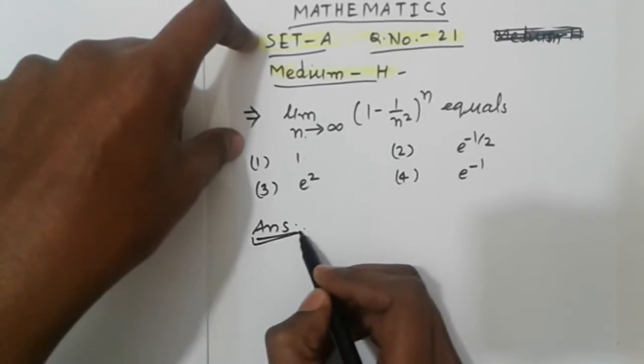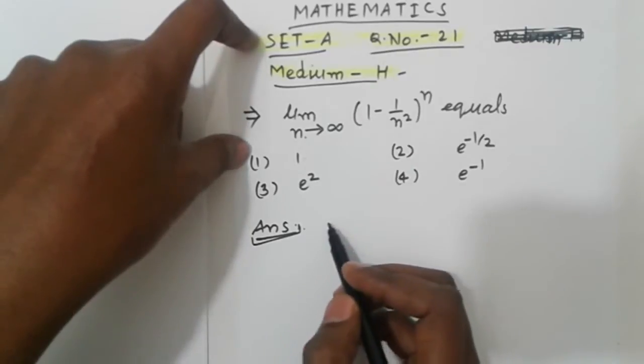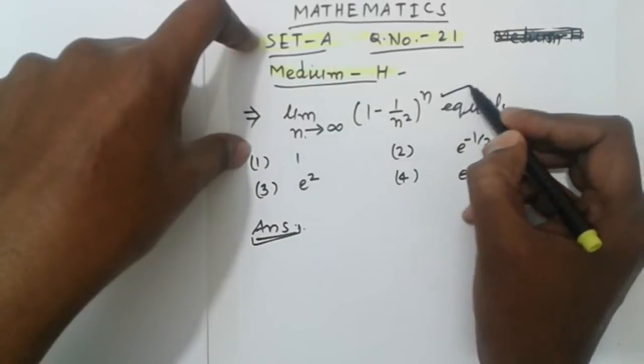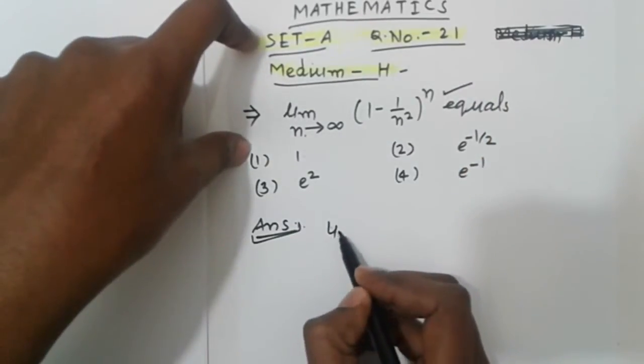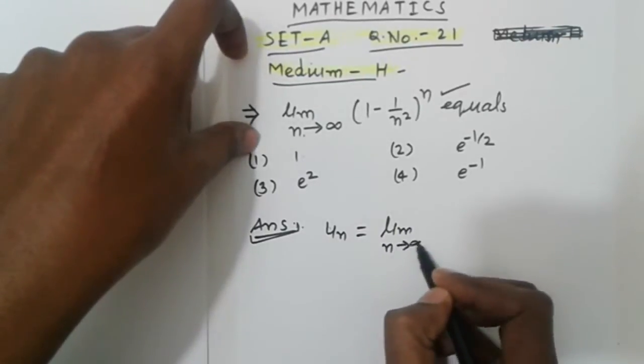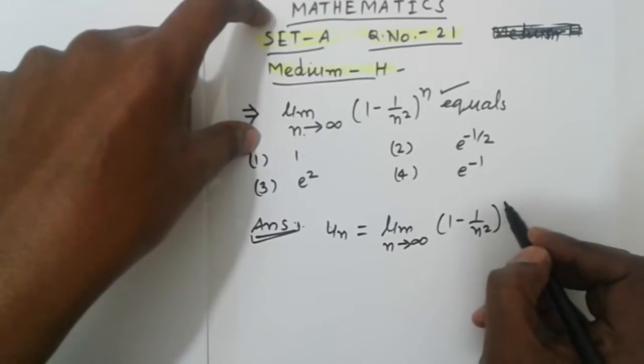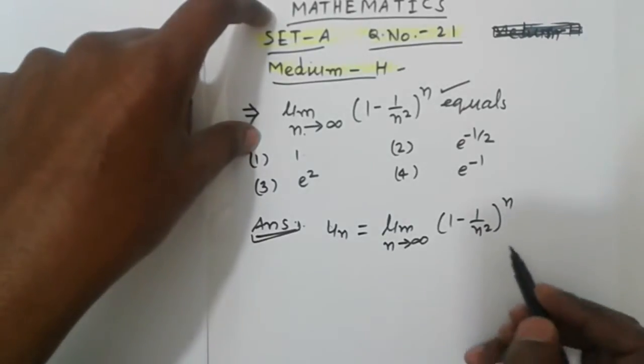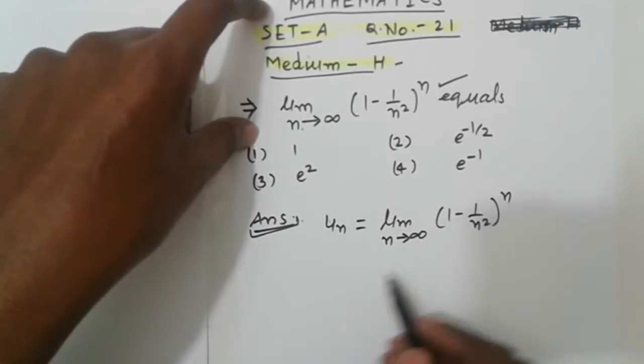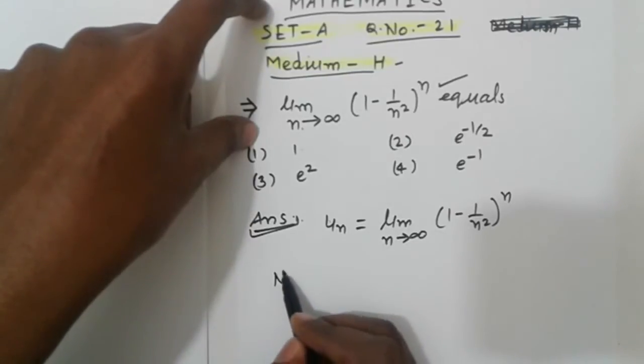Now for the solution, we'll find the answer. Suppose the given series is considered, let u_n = (1 - 1/n²)ⁿ. Now we'll use the Cauchy nth root test.